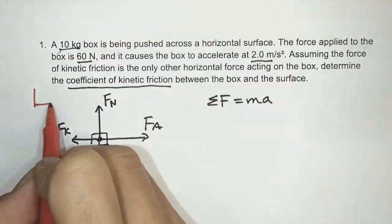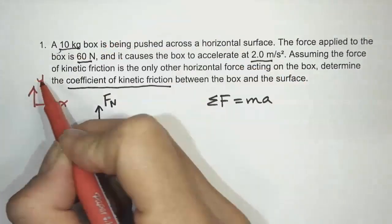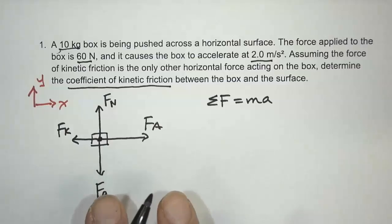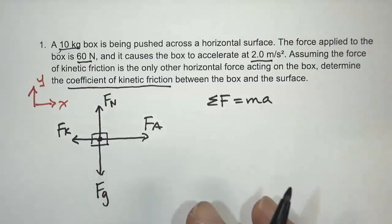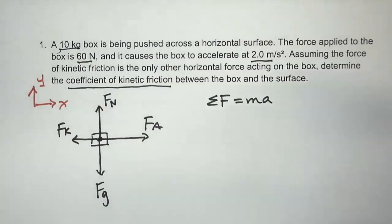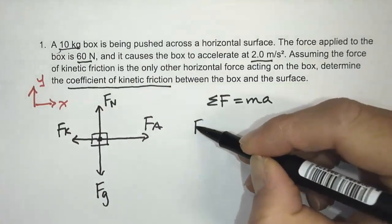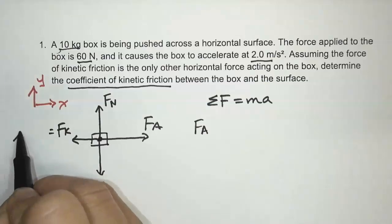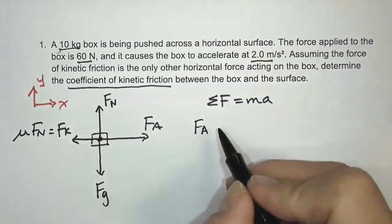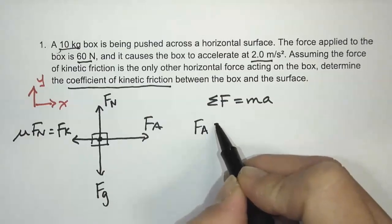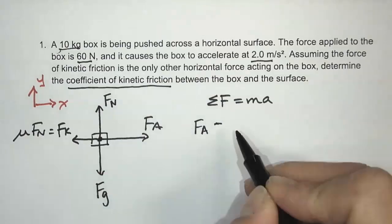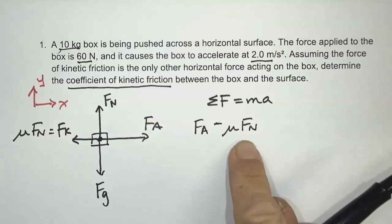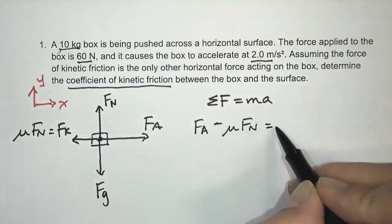I'm going to make right positive and up positive. It's arbitrary — you can make the other direction positive if you like. I tend to make the direction of the larger force positive. So I'm going to take Fa, the force going to the right, minus the force going to the left. Just to remind you, Fk is equal to mu times Fn. So: force applied minus friction force, which is mu times Fn, equals Ma.